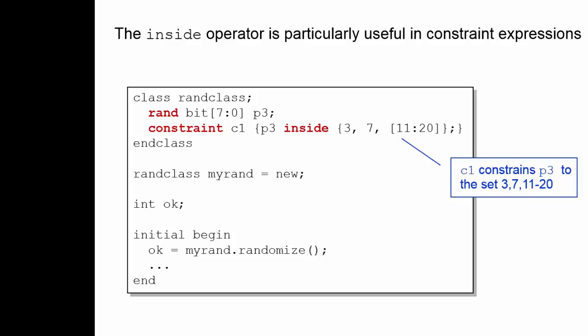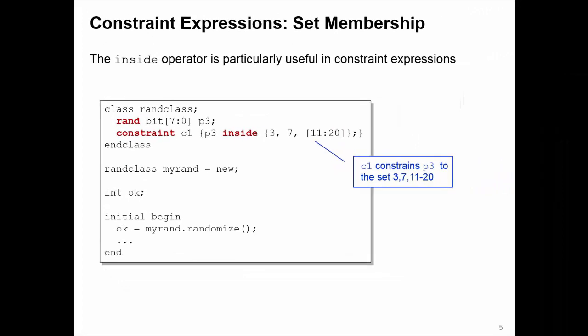The individual items are separated by commas. I then have a close curly brackets to finish the inside list, a semicolon to terminate the inside constraint, and finally a close curly brackets to terminate the constraint block. You'll need an editor with a bracket matching facility if possible.